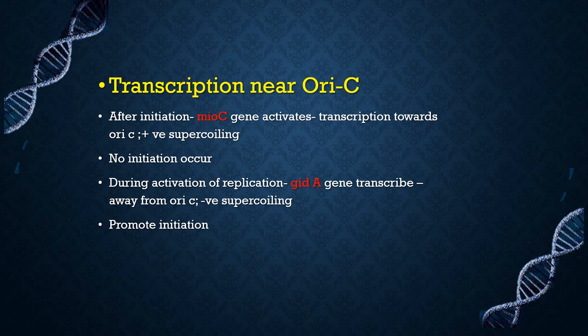To summarize: after initiation the mioC gene is activated and transcribes towards oriC, creating positive supercoiling that decreases accessibility of oriC so new initiation will not occur. When a new activation of replication is needed, the gidA gene is transcribed and creates negative supercoiling near oriC, promoting initiation.